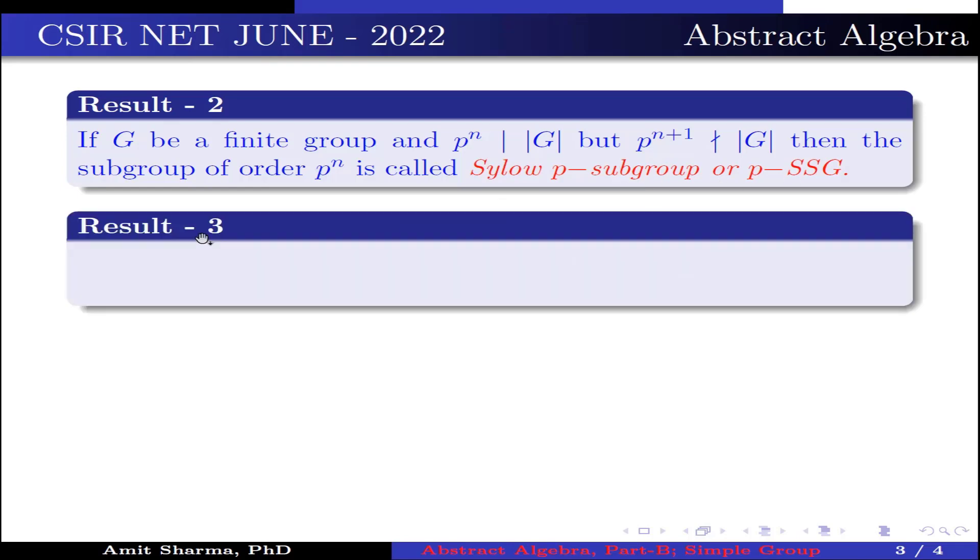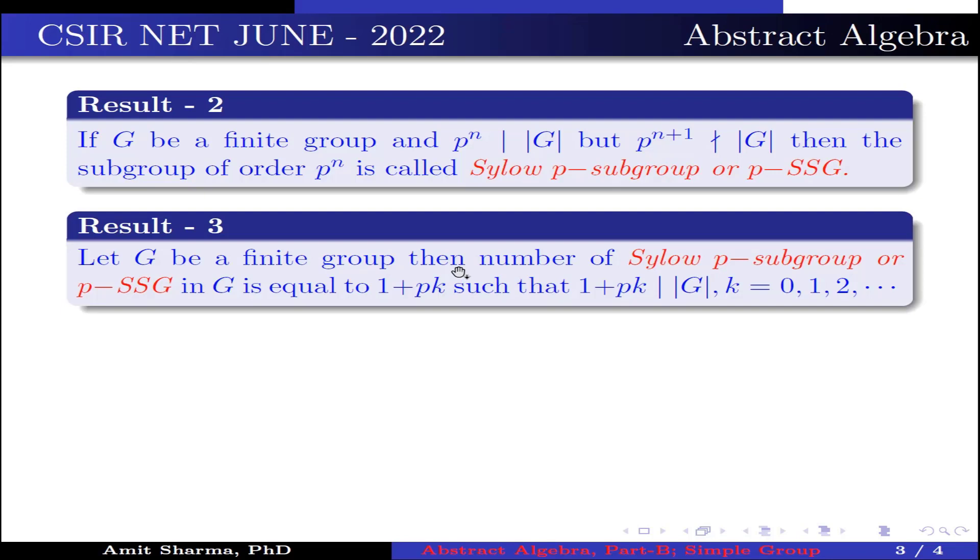Result number 3: Let G be a finite group, then the number of Sylow p-subgroup or p-SSG in G is equal to 1 plus pk, such that 1 plus pk divides order of G, where k is 0, 1, 2 and so on.